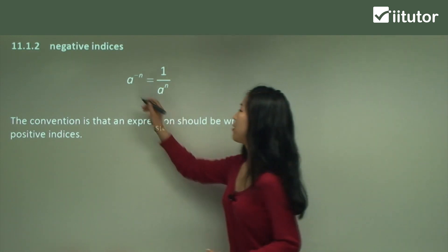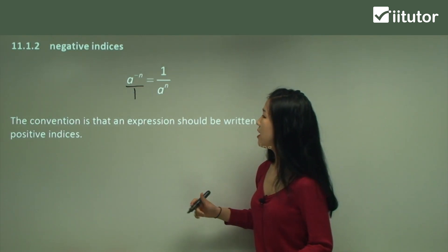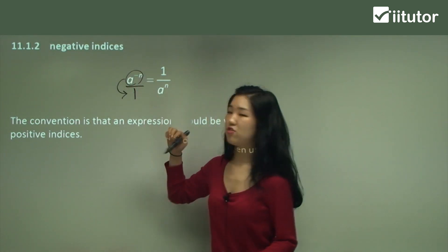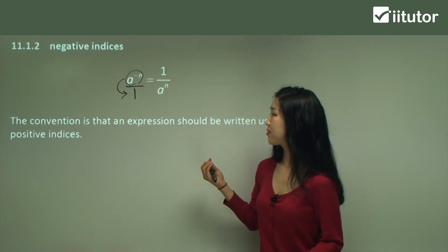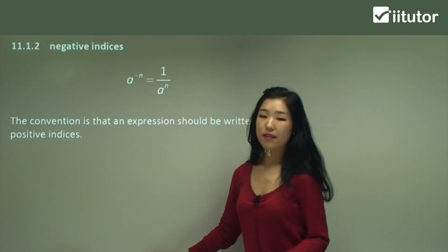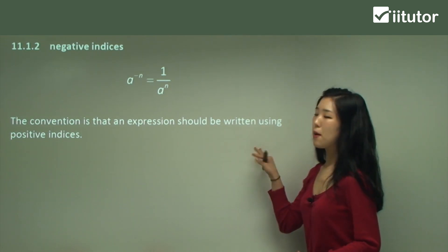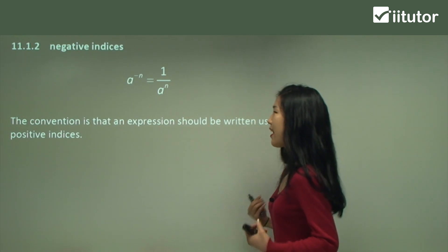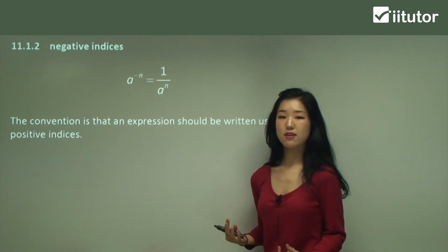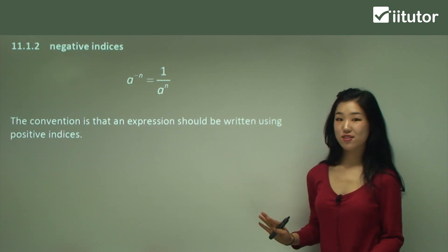How I remember it: a to the power of negative n is simply over 1 if I put it as a fraction. Now if I want to change it to a positive index, I simply move this thing down and then just change the sign. The convention is that an expression should be written using positive indices, so we don't necessarily like having negative indices. The question would often ask you to change everything to positive index. Write that down and let's try some questions.